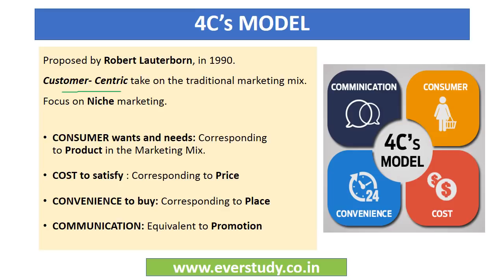4Cs model mein focus was on niche marketing instead of mass marketing. Niche marketing allows to develop conversations that are almost one to one, unlike mass marketing. Toh kya hai ye 4Cs? First, consumer wants and needs, jo ki 4P se product ke equivalent hai. Next C is cost to satisfy, which is equivalent to price. Then it is convenience to buy, jo similar hai place ke. And the 4th C is communication, which is equivalent to promotion.